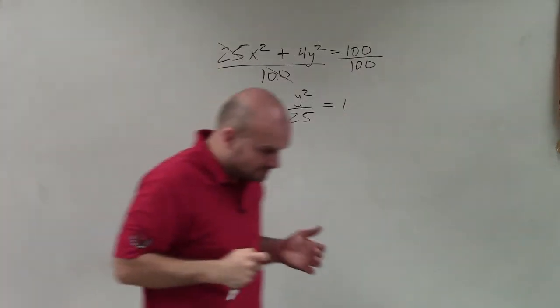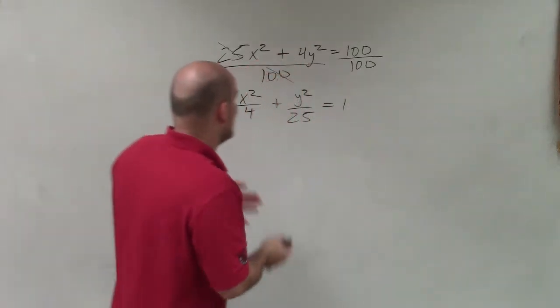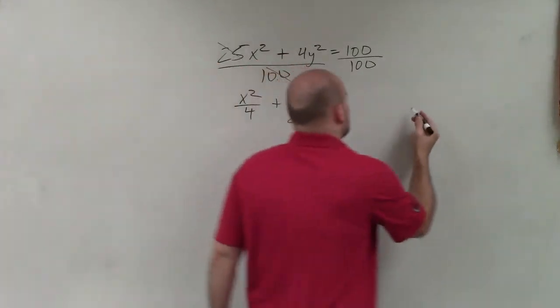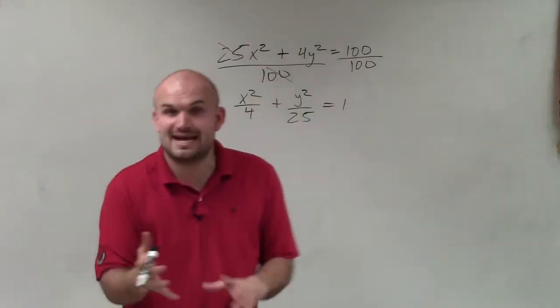So now we have it in more of a standard form. And one thing I notice is I don't have an h and a k, right, because when we're looking at that standard form, x minus h squared, y minus k squared, we don't have an h and a k.